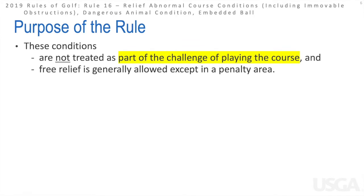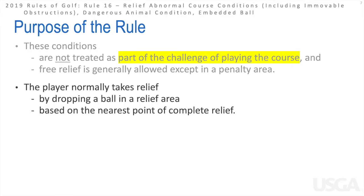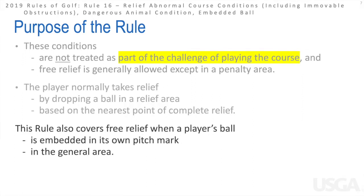The reason we get relief from abnormal course conditions is that they're not treated as part of the normal challenge of playing the course, and that's why we get free relief everywhere except for penalty areas. A golfer takes relief by dropping a ball in the relief area based on the nearest point of complete relief. The rule also covers relief from an embedded ball in its own pitch mark, specifically in the general area.